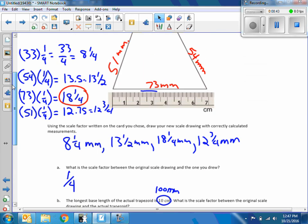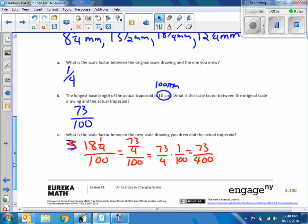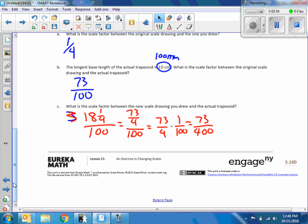I got that from my longest side, 73, and I scaled it a quarter, so now it's 18 and a quarter millimeters. The original was 100 millimeters, so it's 18 and a quarter out of 100.